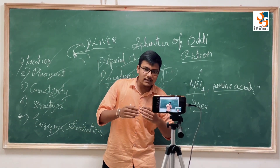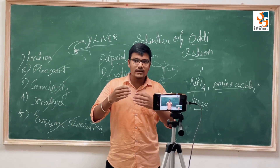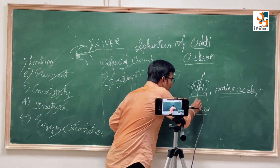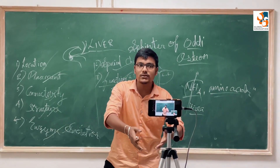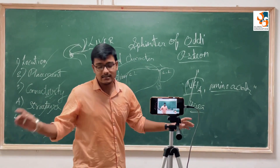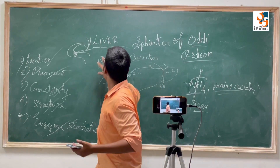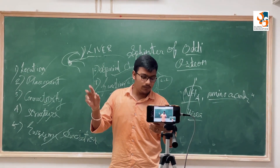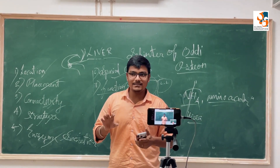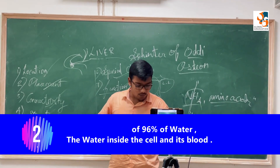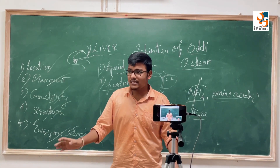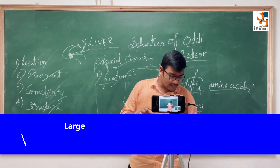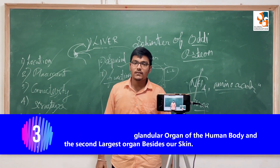This organ breaks ammonia into urea because the kidney cannot excrete ammonia in its raw form. The liver helps the kidney by converting ammonia into urea and then transferring it to the kidney for excretion. Now for some facts: this organ is made up of 10 percent fat. It also contains 96 percent water — this water is inside the cells and in the blood. It is the largest glandular organ of the human body and the second largest organ overall after the skin — it is even bigger than the brain.